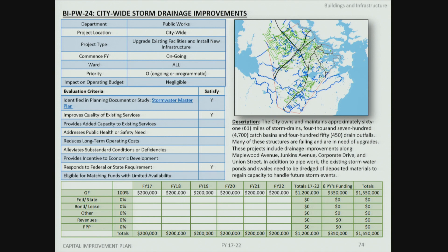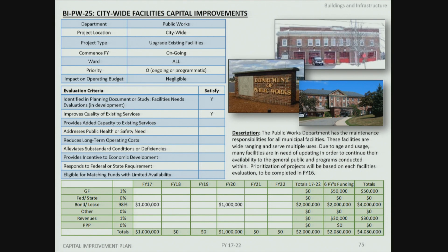The city has over 61 miles of storm drain piping and structures varying in age and condition. These capital funds identify monies for replacement and upgrades of drainage systems citywide. Public works is also responsible for maintenance of municipal facilities; a programmatic study is nearing completion and will be discussed at the March 12th retreat, providing more detail on how those facility funds will be allocated.